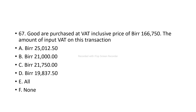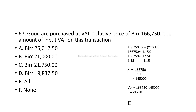To find the VAT amount from an inclusive price, we use the factor 1.15 — because VAT is 15%. So the formula is: VAT-inclusive price divided by 1.15 gives the exclusive price. We divide $106,750 by 1.15 to extract the base price and the VAT component.